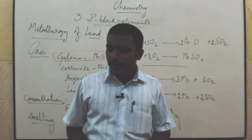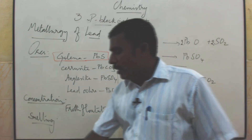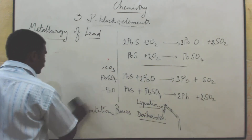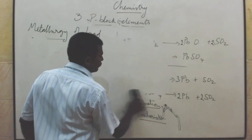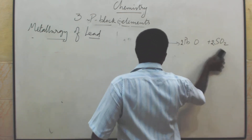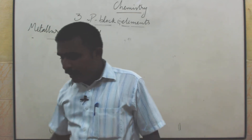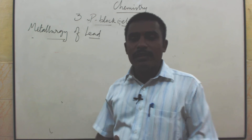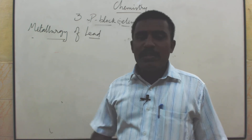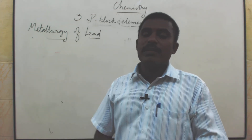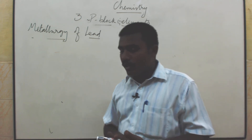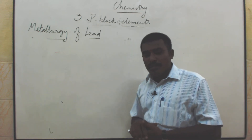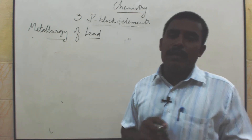Physical properties of lead: Lead is a bluish-grey metal. It is bright with lesser grain colour. It is very soft — it can be cut with a knife. It is a very good conductor of heat and electricity. It also marks paper.